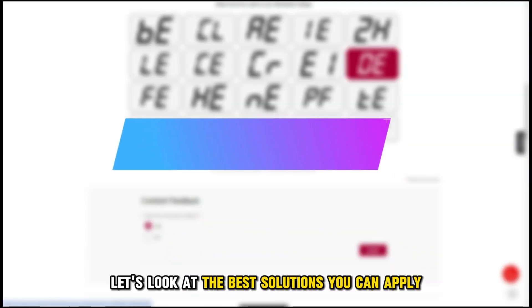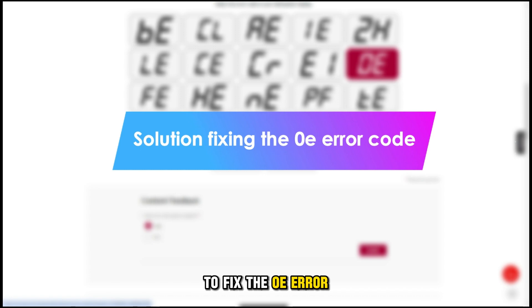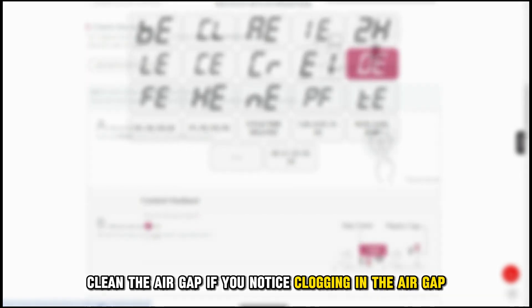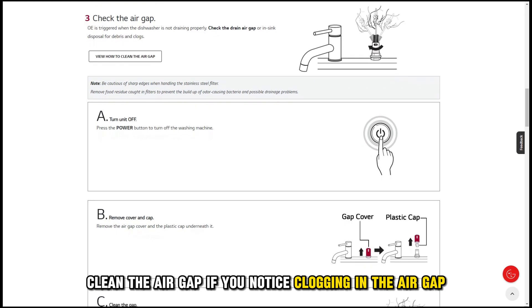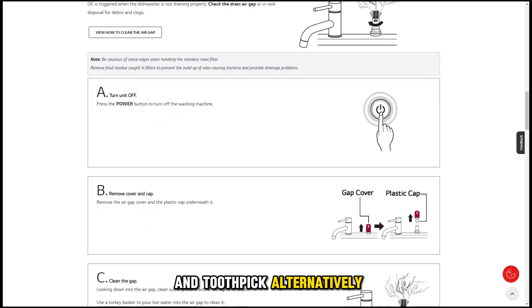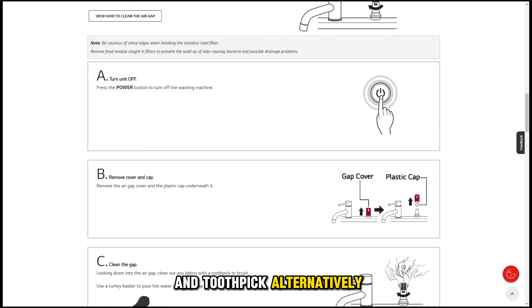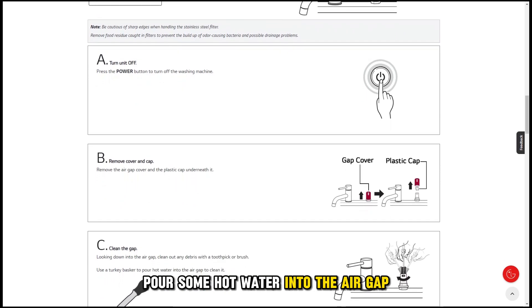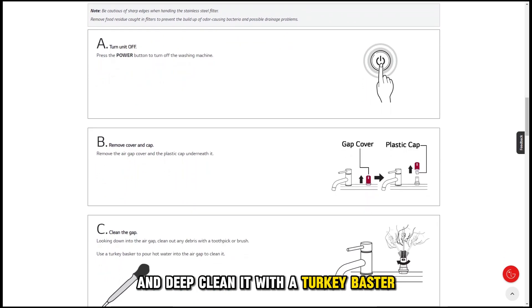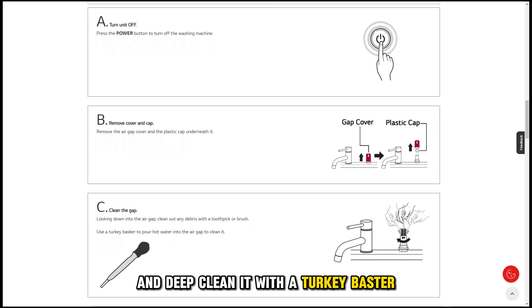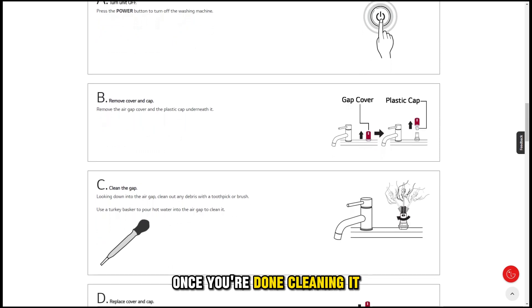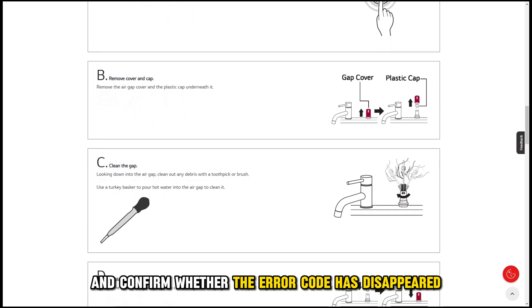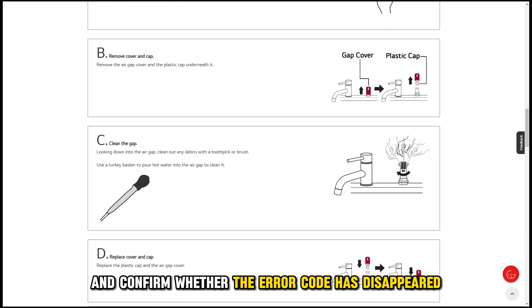Now, let's look at the best solutions you can apply to fix the OE Error. Clean the air gap. If you notice clogging in the air gap, you can clean it with a bottle brush and toothpick. Alternatively, pour some hot water into the air gap and deep clean it with a turkey baster. Once you're done cleaning it, replace the cap and confirm whether the error code has disappeared.